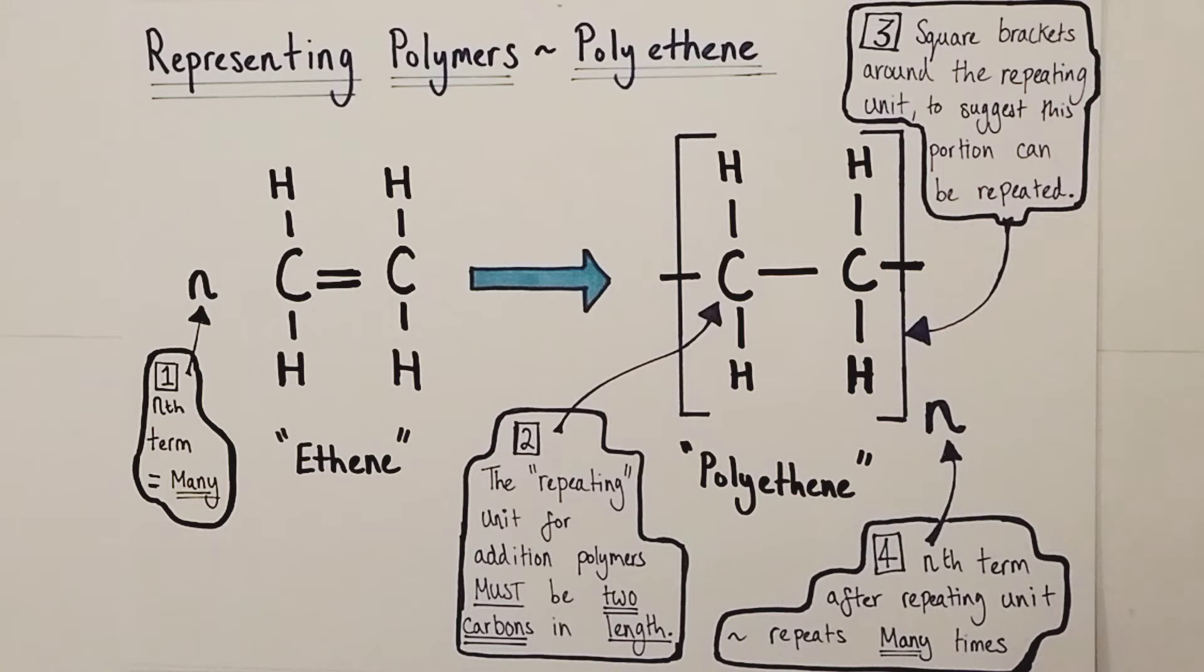And so finally we think about naming our polymer. The original monomer was called ethene and this long chain molecule was comprised of many ethene monomers joined together, so it's given the name polyethene, which ultimately just means many ethene, many ethene monomers joined together.